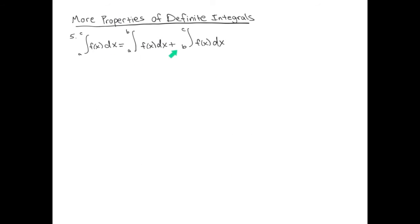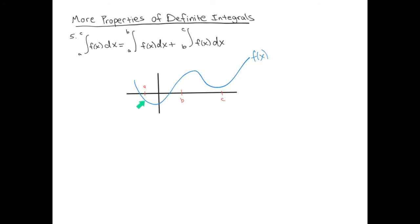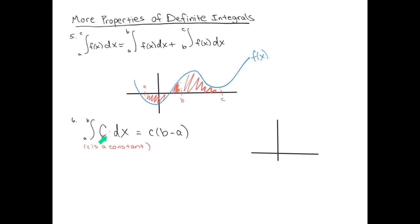The next property is breaking integrals up along the x-axis. If we have a definite integral from a to c with b in the middle, we can break it into an integral from a to b plus an integral from b to c. Another property: the definite integral of a constant c with respect to x from a to b is simply a rectangle with height c and width b minus a, giving c times (b minus a).